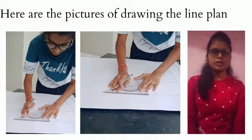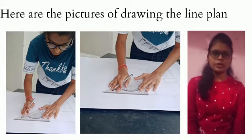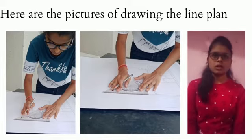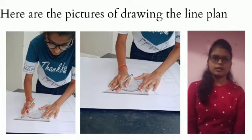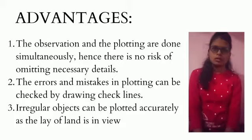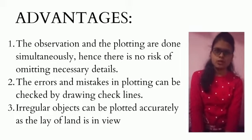This line plan was drawn according to Vastu Shastra. In this plan, there are 11 columns. There are some advantages of the plan. First, the observation and the plotting are done simultaneously.